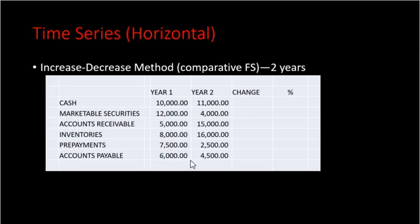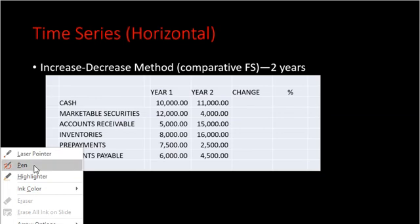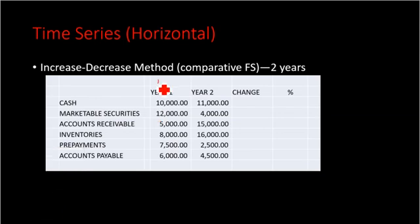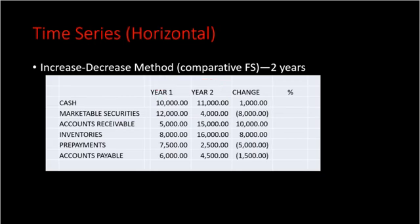Year two can also be your base year if you're evaluating earlier years, under the assumption that year two represents normal operations. For our example, we'll mark year one as the base year and year two as the current year. The first step in the increase-decrease method is to get the difference of the current year from the base year — subtract year one amounts from year two amounts to get the change. The second step is to express this as a percentage of the base year figures.